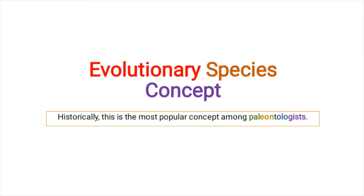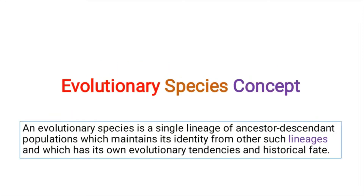In this video we will discuss the evolutionary species concept — how we define a species while considering evolutionary history. The evolutionary species concept is most popular among paleontologists. According to this concept, a species is a series of populations that inherit certain characteristics from ancestors to descendants, and they maintain their identity, meaning they are distinct from other lineages.